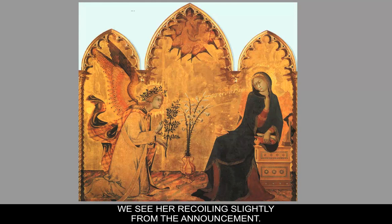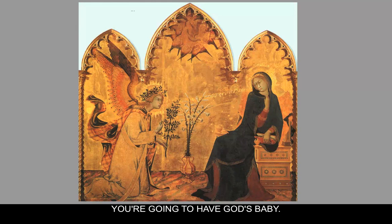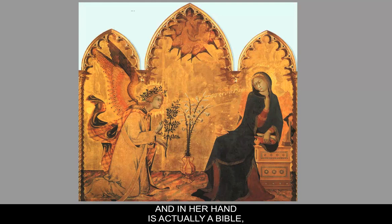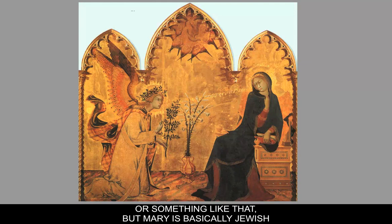Just like in Pisano's piece, we see Mary recoiling slightly from the announcement. Coming out of Gabriel's mouth — I think in Italian or Latin — is basically the Annunciation, saying she's going to have God's baby. She's seated on a throne with her head covered, a symbol of piety, similar to the Islamic hijab worn today. In her hand is a Bible, because Mary would be a pious person reading scripture. Mary is basically Jewish, and she would have been reading the Old Testament.